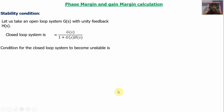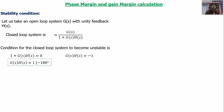The condition for the closed loop system to be unstable is 1 plus G(s)H(s) equal to zero, which means G(s)H(s) equals minus 1. Minus 1 means magnitude is 1 and phase angle is minus 180 degrees. So we write G(s)H(s) equal to 1 at an angle of minus 180 degrees — this is the condition for instability.